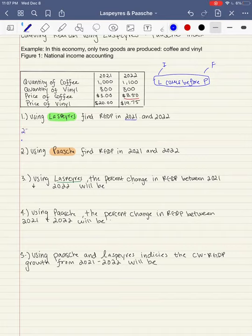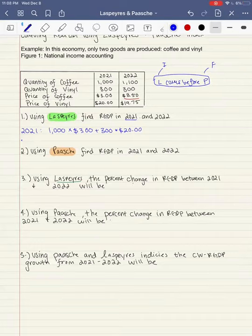So let's go ahead and say 2021, we have a quantity of 1000 times the price of coffee, which is $3, plus the quantity of vinyl in 2021 times the price of vinyl.